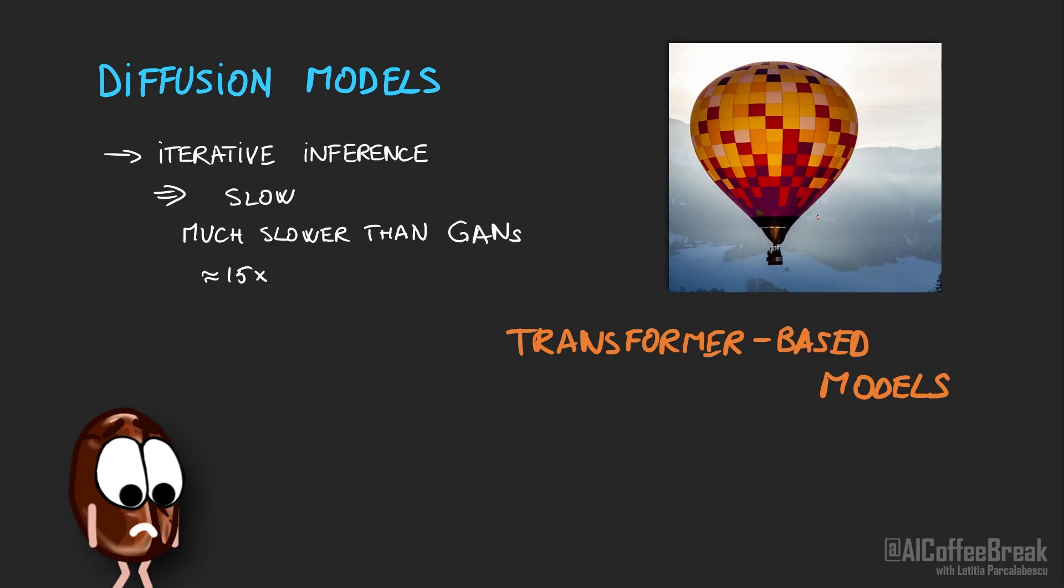Diffusion models take hundreds of sampling steps, so of inference steps of the same unit neural network, to gradually paint structure from noise. So diffusion models take a long time to produce an image for the end user.